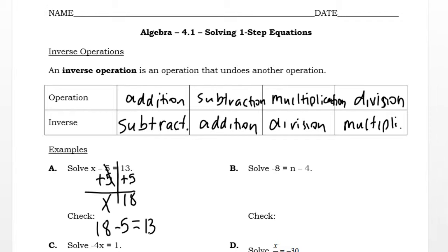Example B has n take away 4, and the answer is negative 8. So the opposite of take away 4 is plus 4. I'm going to add 4 to both sides, and n is negative 4. So if I had negative 4, and I took away 4 more, it leaves me with negative 8.